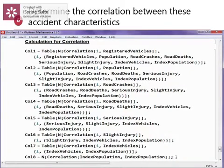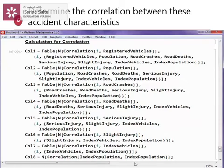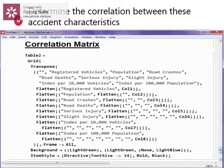In the next section, we are going to determine the correlation between these accident characteristics. These codes are the calculation to obtain the correlation coefficient. These codes are to obtain the correlation matrix in tabular form.